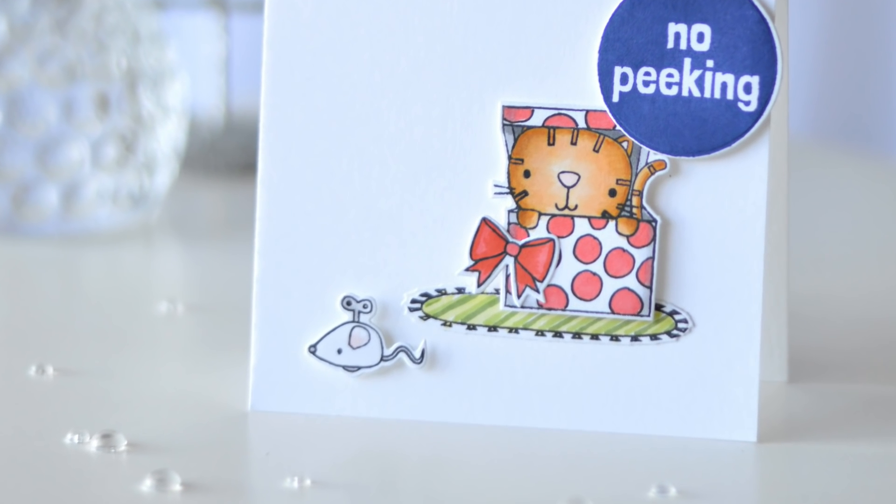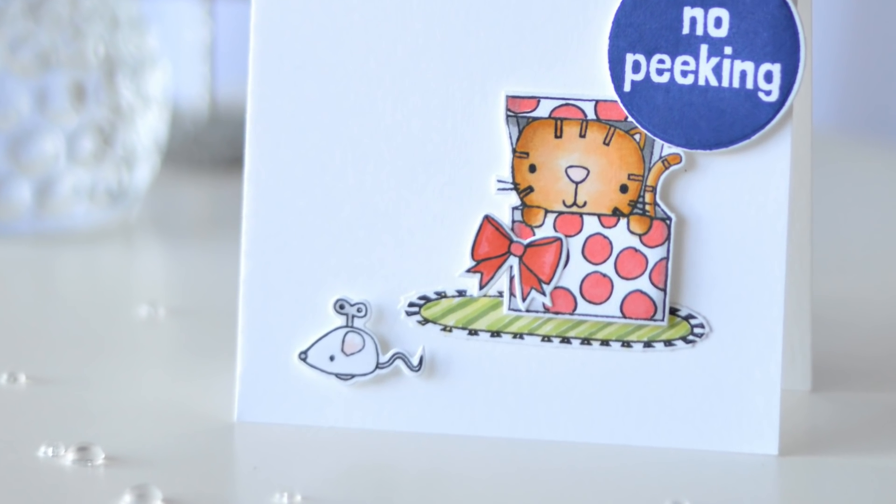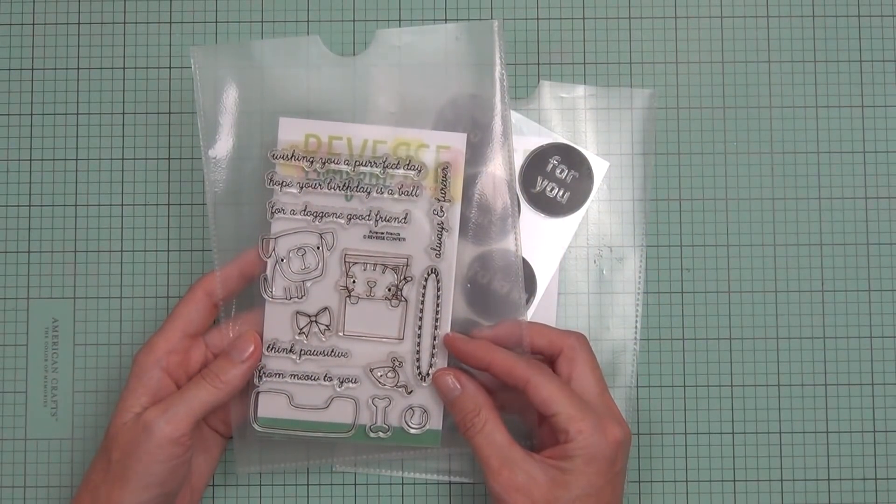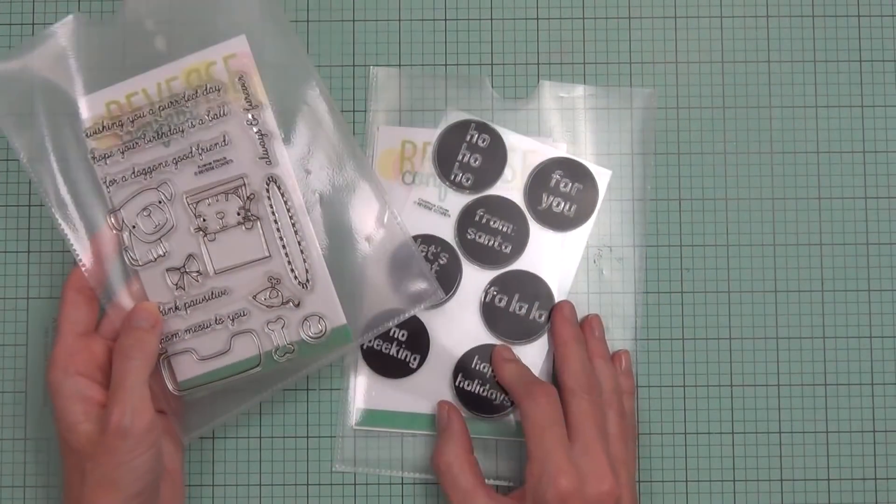Hi, it's Therese from Lost in Paper. Today we're going to be adding some very simple, easy details to our stamps. This is part of a release for Reverse Confetti, November 2018.